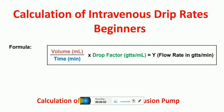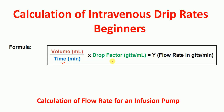Hello everyone. In this lecture today I'm going to talk to you about calculation of intravenous drip rates, and also about calculation of flow rate for an infusion pump. The formula to calculate intravenous drip rates is volume in ml divided by time in minutes, multiplied by drop factor in gtts per ml.